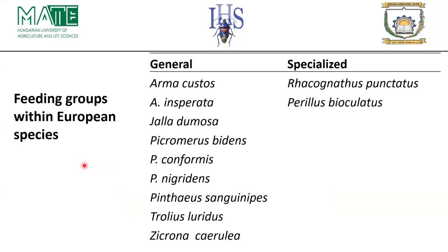Among the European Asopinae, we group them as general predators and specialized predators. We have only two specialized predators: Rhacognathus punctatus and Perillus bioculatus, and the remaining species are generalist predators.